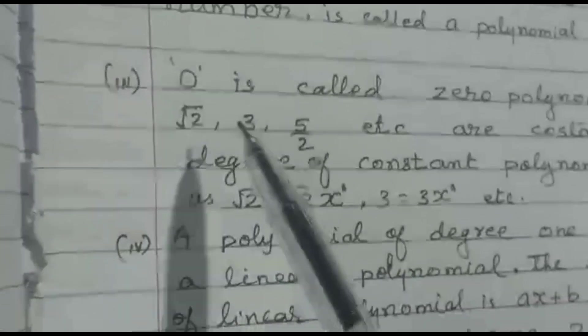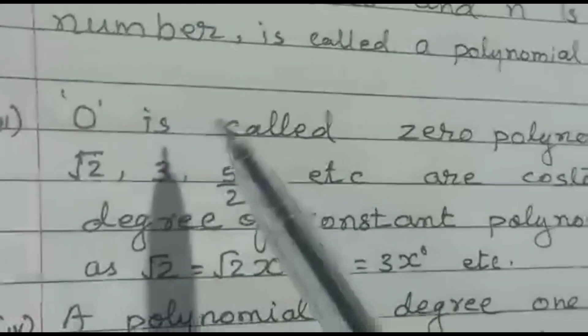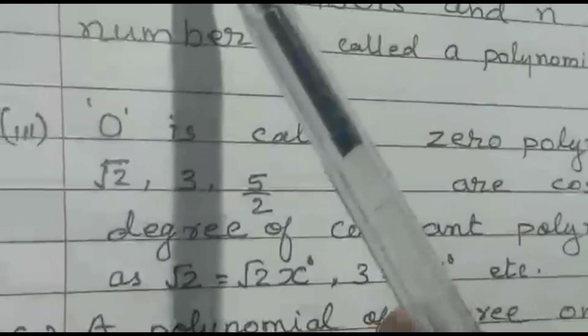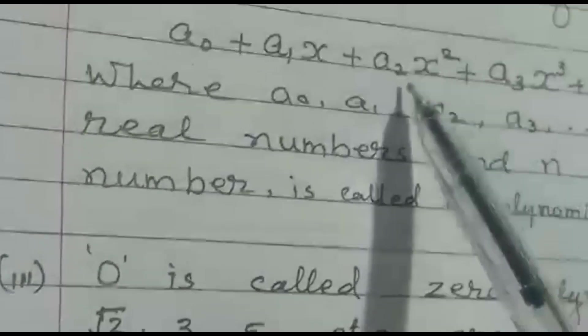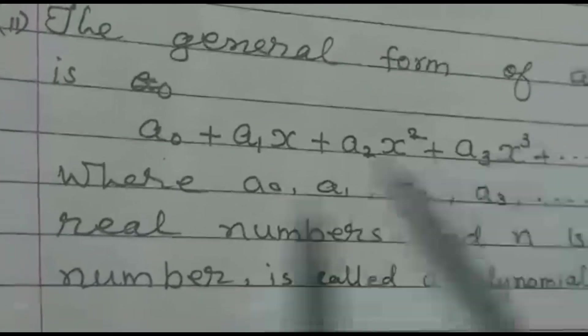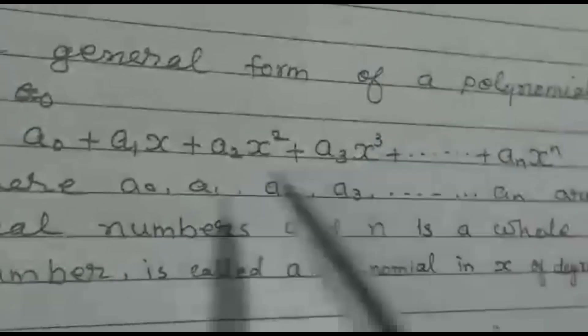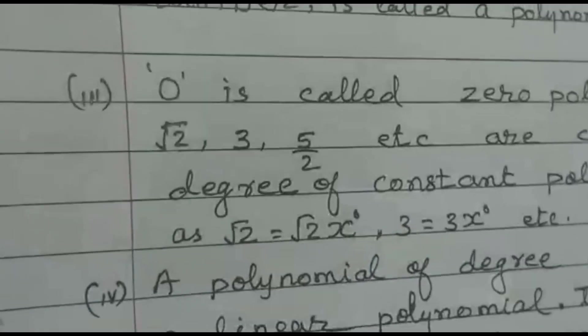A special case: 0 is called the zero polynomial. We get the zero polynomial when all the coefficients a₀, a₁, a₂, a₃, ..., aₙ are each equal to 0, making the whole polynomial equal to 0. Such a polynomial is called the zero polynomial.